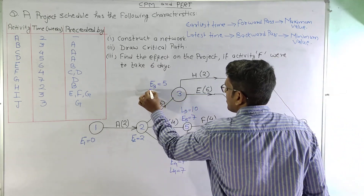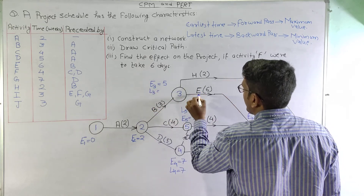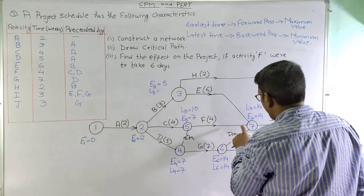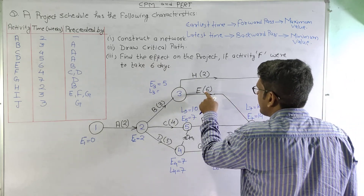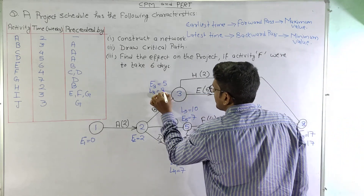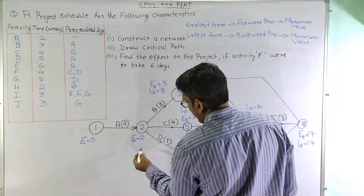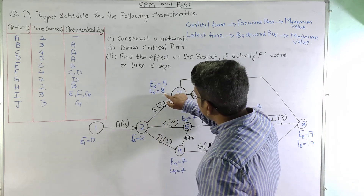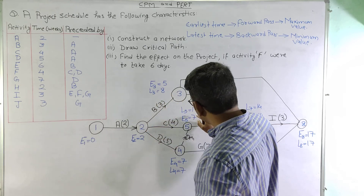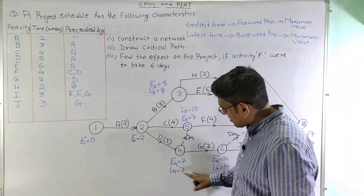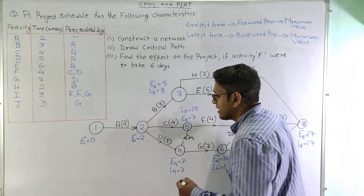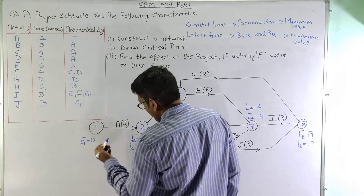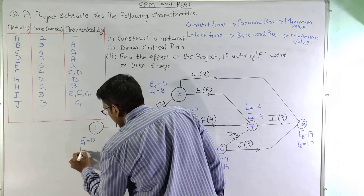At node 3, more than one outgoing arrow: 17 − 2 = 15, and 14 − 6 = 8. We select the minimum, so L3 = 8. At node 2, three outgoing activities: 8 − 3 = 5, 10 − 4 = 6, and 7 − 5 = 2. We select the minimum, so L2 = 2. At the initial node: 2 − 2 = 0, so L1 = 0.